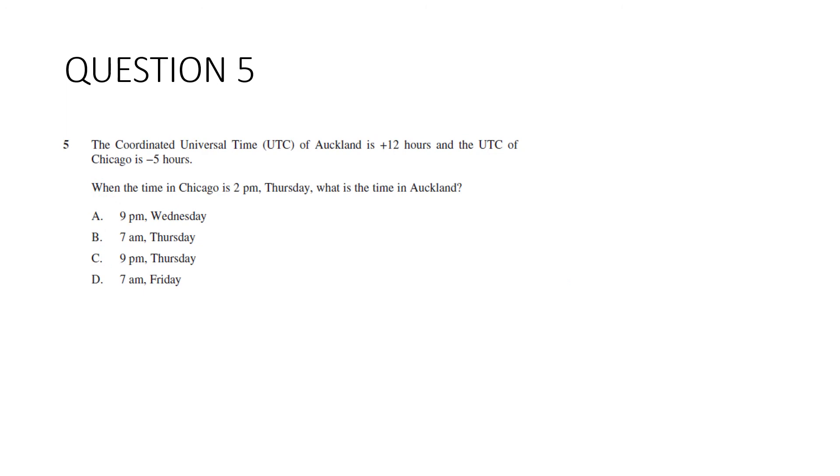Question 5. The UTC of Auckland is plus 12 hours, and the UTC of Chicago is minus 5 hours. When the time in Chicago is 2pm Thursday, what is the time in Auckland? So it's another diagram question. So let's draw it out so we understand what's going on. Here's Chicago. It's 5 hours behind London, or Greenwich Mean Time. And Auckland is 12 hours ahead. So between Chicago and Auckland is 17 hours. We know that in Chicago it's 2pm on Thursday. What time is it in Auckland? We need to add 17 hours to that. Now we can already see that that's going to go over to the next day.